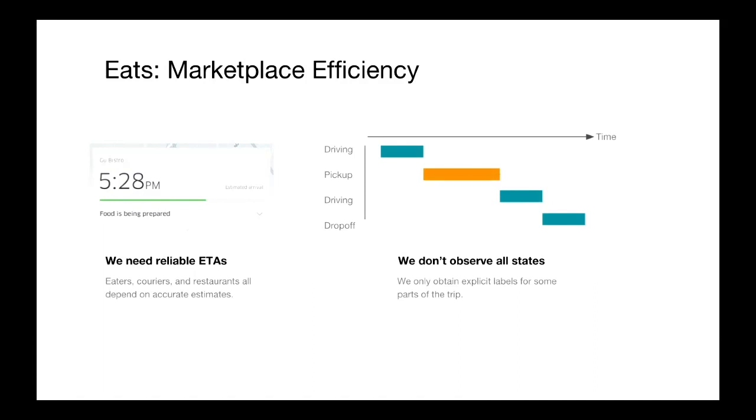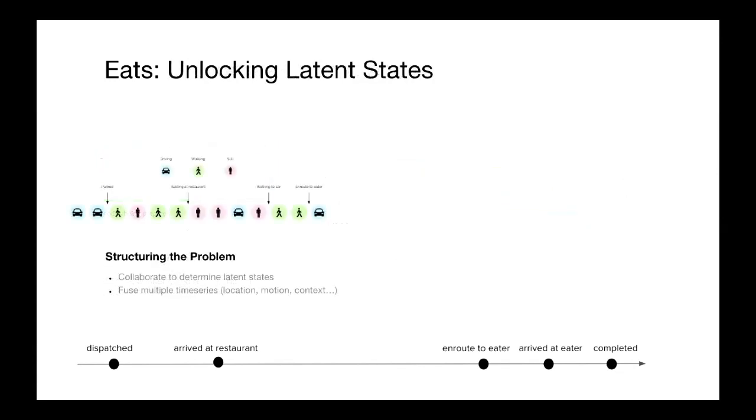They pick up the food and then they're driving to the eater and then they have to actually drop off the food. The Uber Eats team came to us and said, we have this complex interaction. We'd like to get more insight into what the sources of friction are. Has the courier taken a long time to find parking? Were they waiting in the restaurant for a long period of time because the food wasn't ready? When you look at the actual timeline that they have that they're trying to understand, there's an enormous blank gap in the middle, which they have no insight into.